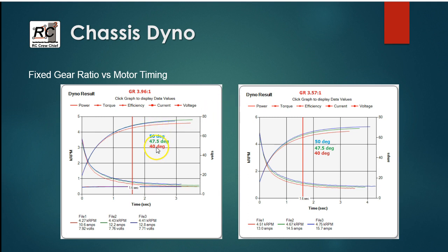So first up here, we've got the fixed gear ratio versus motor timing. So I did three different motor timings: 40 degrees, 47 and a half, and 50. And this is at a gear ratio of 3.96. This is a 21.5 turn motor for USGT class. So you can see here, this is the RPM versus time grounds. This red line here just gives us a way to select a specific point and look at the data at that point. So at 1.6 seconds, you can see here file one, which is the 40 degree timing, has the lowest speed.